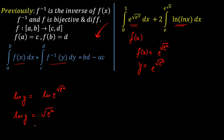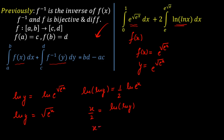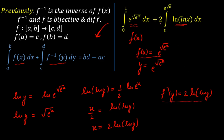To remove the square root, I take log on both sides again with base e: ln(ln(y)) = (1/2) ln(e raised to the power of x). Taking x outside gives x/2 = ln(ln(y)), so x = 2 ln(ln(y)). Therefore f inverse of y = 2 ln(ln(y)). So if f(x) = e raised to the power of root over e raised to the power of x, then the inverse of that function is 2 ln(ln(x)).